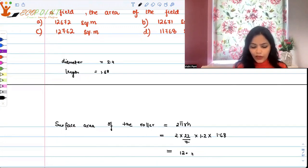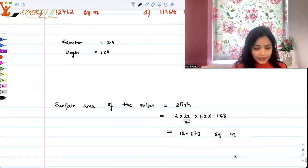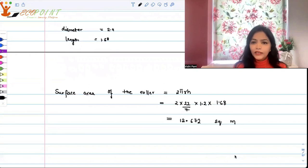In one complete revolution, the roller covers this much only because that's the surface area. In the question, it takes 1000 complete revolutions in order to cover the entire field.